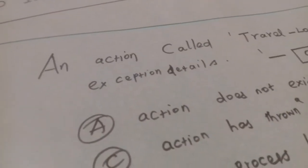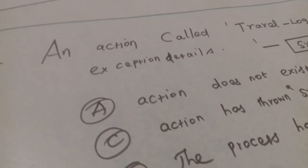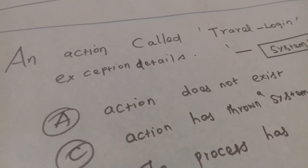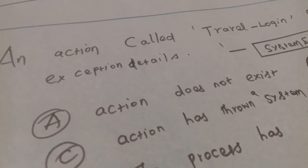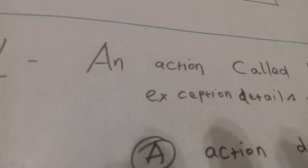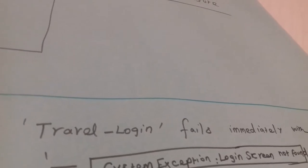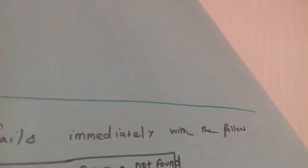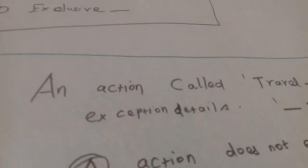Hi guys, today we are going to discuss Blue Prism developer accreditation questions and process flow. I'm reading the question: an action called Travel Login fails immediately with the following exception.